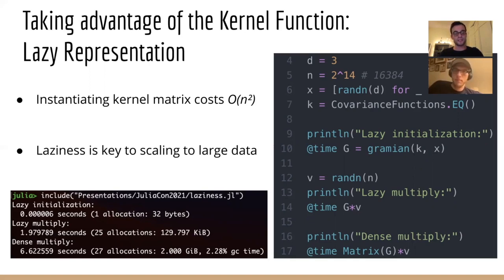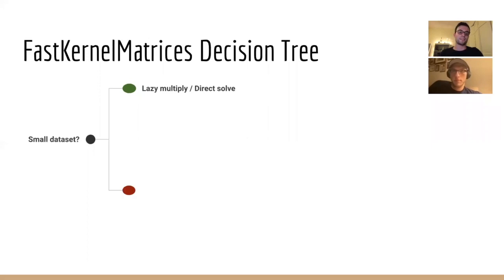Now, based on this lazy representation, we can talk about the structure of our proposed factorization routine. And this factorization routine follows a decision tree that executes different paths for different types of kernel and data properties. So first, we check if the dataset is small. And if it is, we can still perform multiplications lazily, but also perform dense factorizations such as Cholesky or LU.